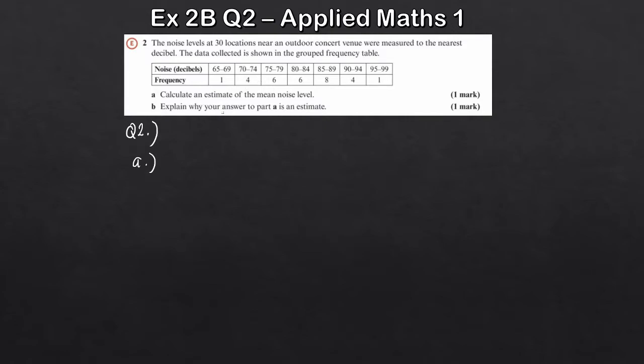So what I mean by that, for example for the first frequency here for the noise in decibels of 65 to 69, we take the midpoint. So the midpoint would just be 65 plus 69 by 2, but you can see pretty easily that the midpoint is just 67. So what I'm going to get here for the mean, the mean is going to be 67 and we times it by the corresponding frequency. So 67 times 1, so that would just be 67. But what we'll do is we'll work out all the actual sums first of the calculation and then we'll just sum it up.